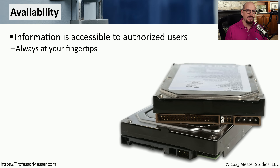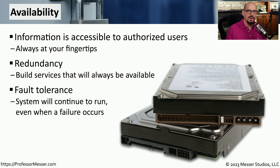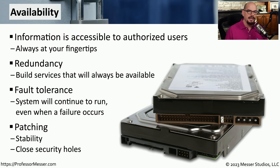Availability is that leg of the CIA triad that ensures people have access to the data they'd like to view. One way to provide this availability is to have systems designed to always be up and running. We might combine this with fault tolerance, where we have multiple components, and if one fails, another can pick up and continue to operate normally. You'll also constantly need to make sure that systems are managed and updated by patching them. This ensures systems are always as stable as possible and that we can close any existing security holes, preventing someone from gaining access through an exploit.